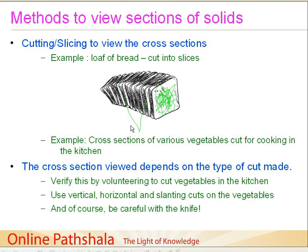Another very common example is the cross-sections of various vegetables which are cut for cooking in the kitchen. One important thing to note is that the cross-section depends on the type of cut made. You could try this for yourself — volunteer to cut vegetables in the kitchen and be a bit playful by giving different cuts: vertical, horizontal, and slanting cuts on vegetables like a carrot, tomato, or potato. A word of caution: be very careful with the knife so as not to hurt yourself.